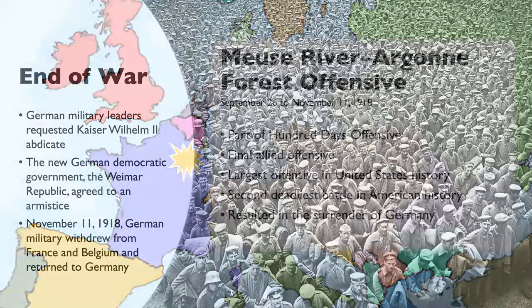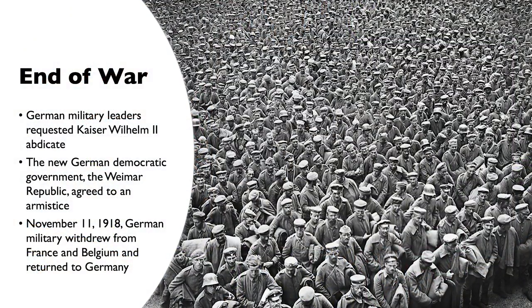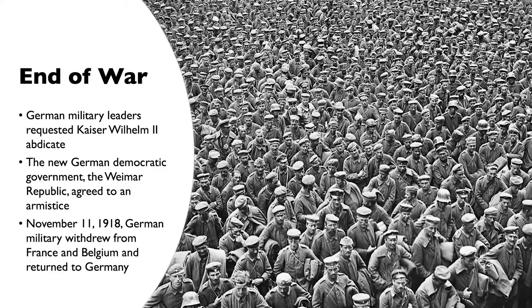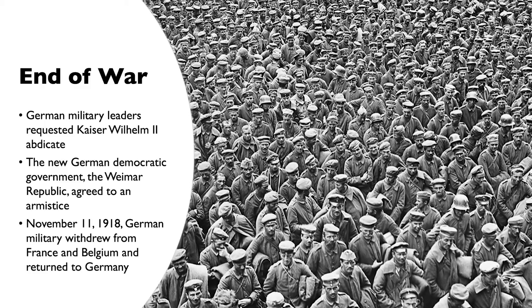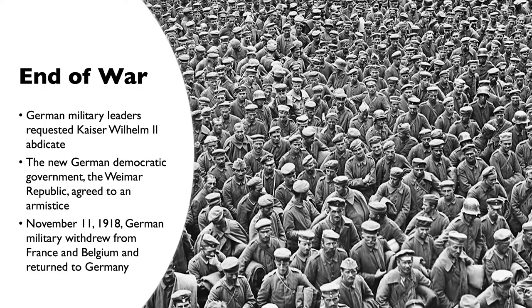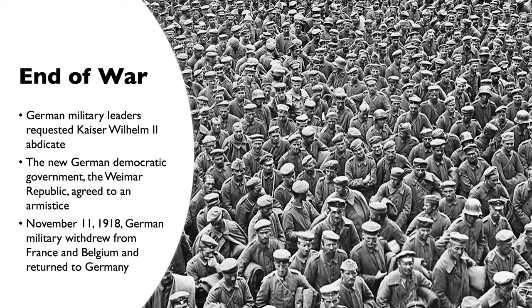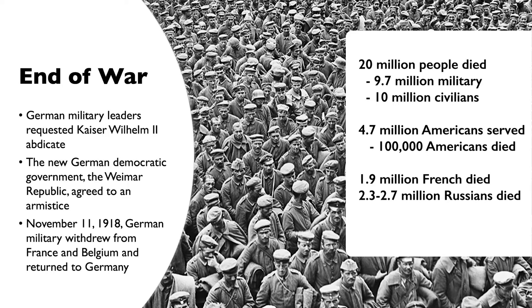The end of the war came about as German military leaders requested Kaiser Wilhelm II abdicate. The new German democratic government — the Weimar Republic — agreed to an armistice. On November 11, 1918, Germany's military regime withdrew from France and Belgium and returned to Germany. At this time Germany was in chaos. In total, 20 million people had died in World War I — about 9.7 million military personnel and 10 million civilians. 4.7 million Americans served: 4 million in the army, 600,000 in the navy, and 80,000 in the marines. More than 100,000 Americans died — 53,000 in battle and more from disease. Other Allied forces lost even more: France lost 1.9 million, and Russia between 2.3 and 2.7 million. It was a catastrophe.